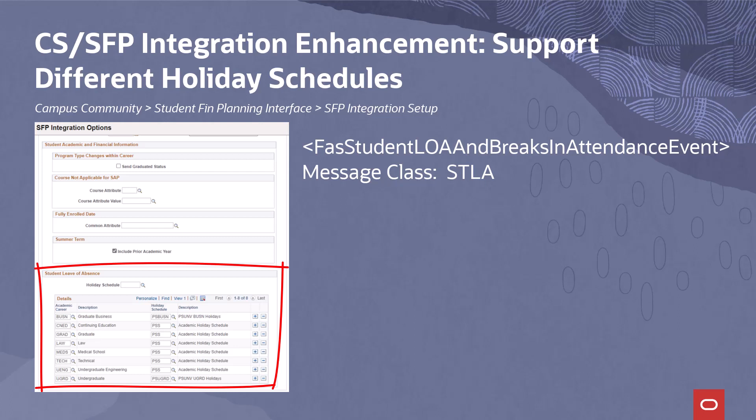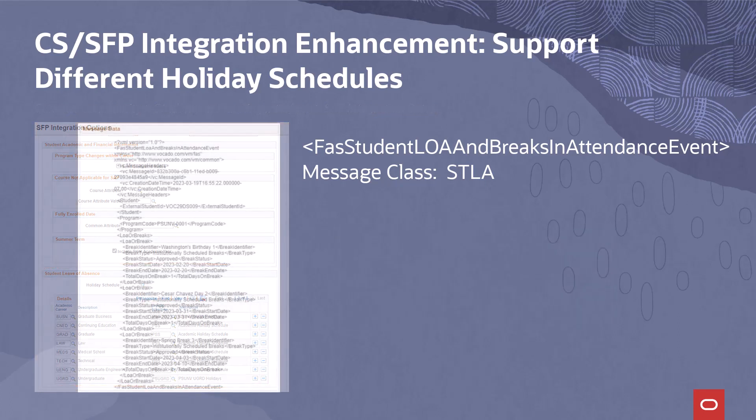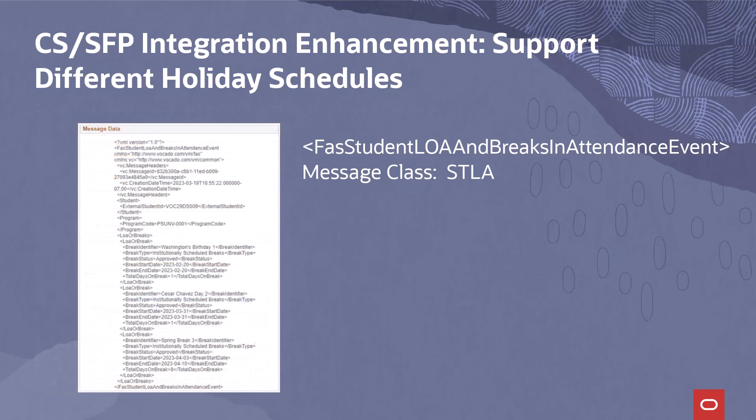Currently, the STLA handler creates individual entries for each day of a break. For instance, Spring Break 2024, which may take place from March 6 to the 10th, has five entries: Spring Break 1, Spring Break 2, and so on. This is not the desired format for consumption by Oracle Student Financial Planning. The handler will now combine the consecutive breaks into one entry with a total number of days attribute, indicating the total length of break. The student career term data is used to determine the applicable holiday dates.